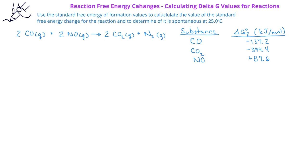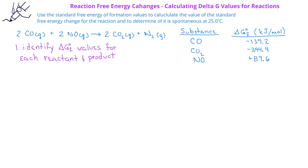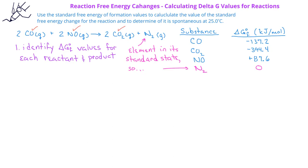We're given a table with the standard free energy of formation values for CO, CO₂, and NO. We begin by identifying the standard free energy of formation values for the reactants and products. Three of these are given, but the standard free energy of formation for N₂ is not given. However, N₂ gas is an element in its standard state, and therefore the free energy of formation for N₂ gas is 0.